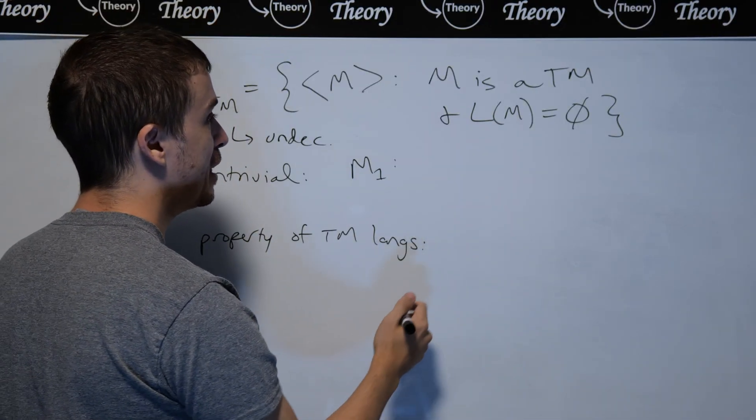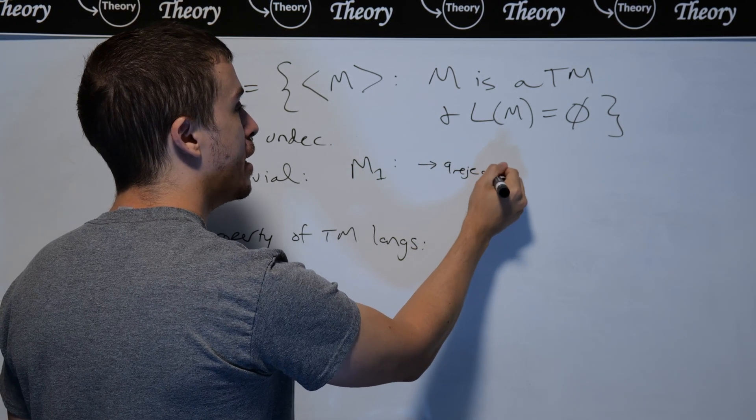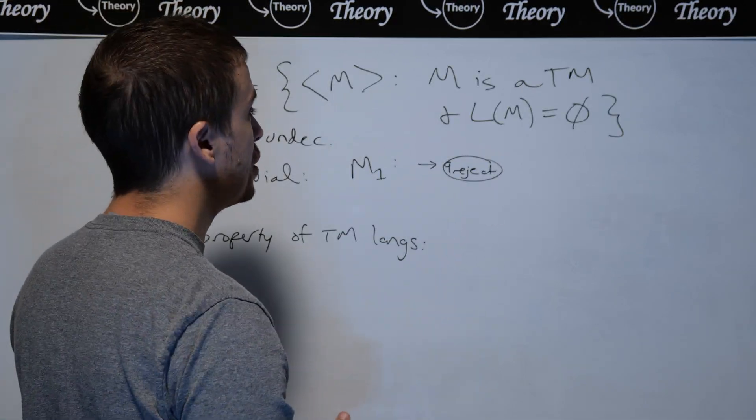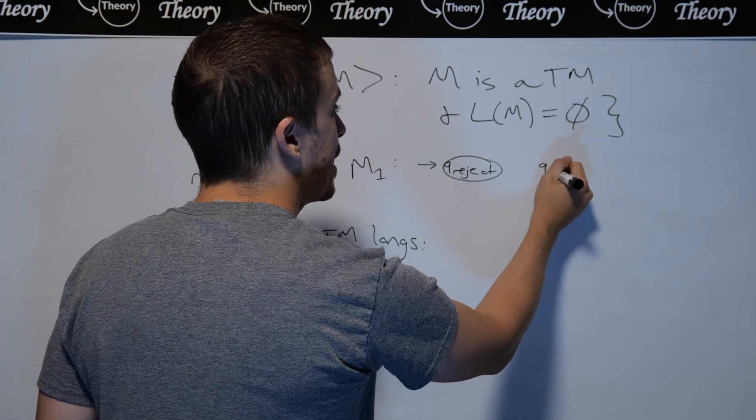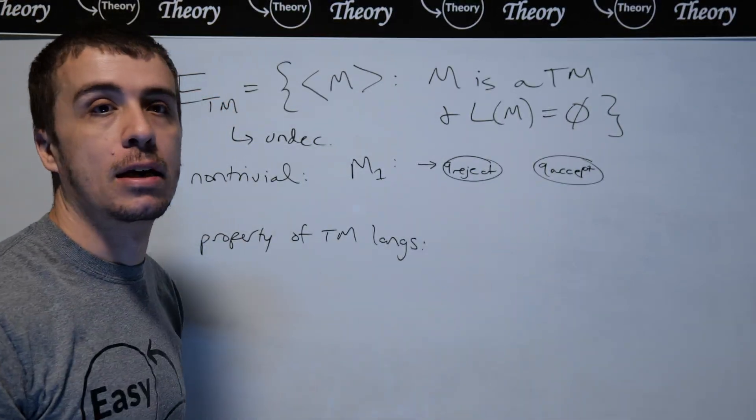So one thing that we can do is to just reject on every single string that is given. So I can make the start state of this Turing machine the rejecting state and I need the accept state somewhere and I'm just going to put it over here and not connect it at all.